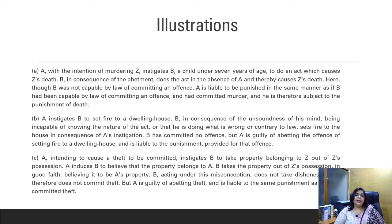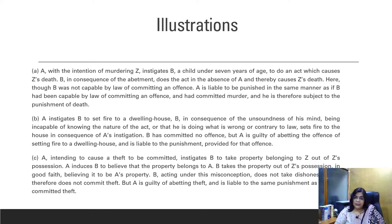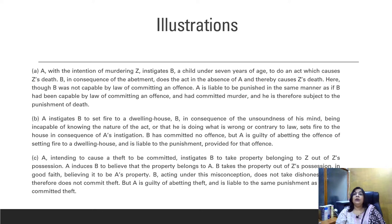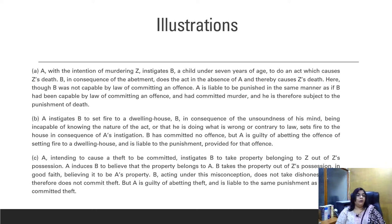The second category is lunatic. Lunatics are persons not at all capable of understanding what is wrong and what is right, the nature of the crime, and they are not having any intention to commit any wrongful act because they have a disease. They are also not capable of understanding the consequence of the act and do not have knowledge of the act they are committing. But the person who is abetting a lunatic to commit any offense mentioned under IPC will be guilty of that offense for which the lunatic was abetted.